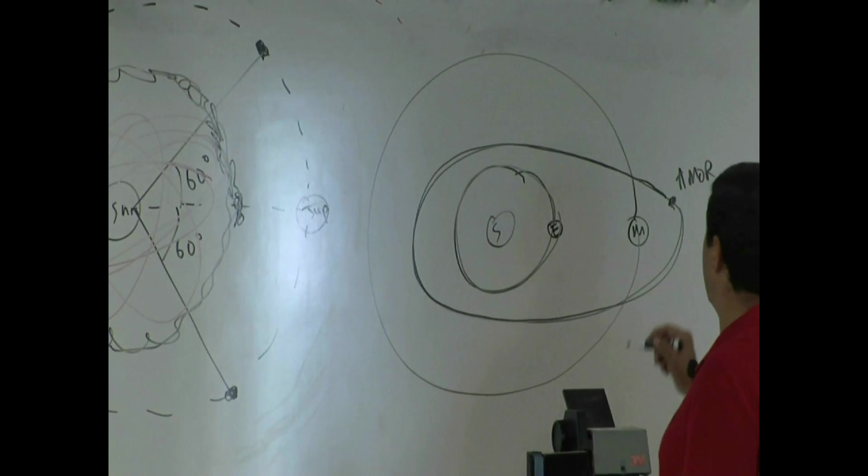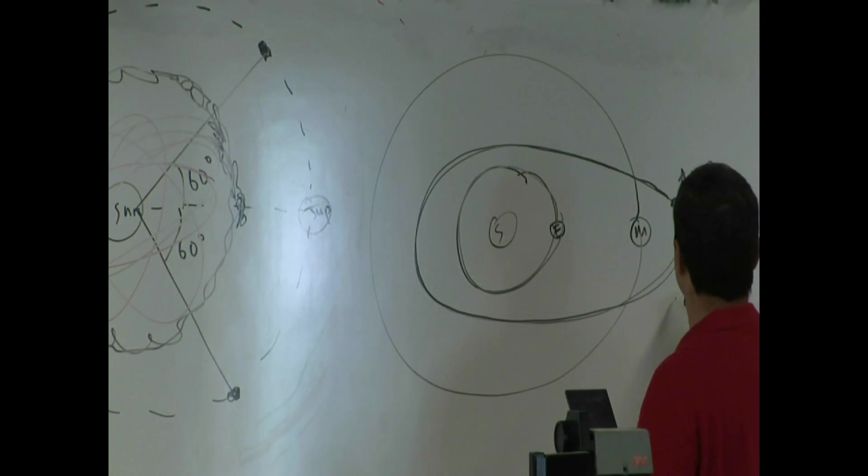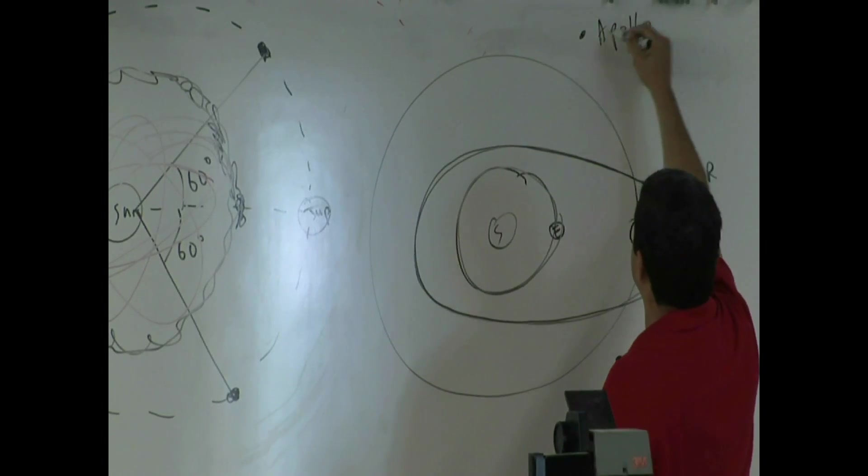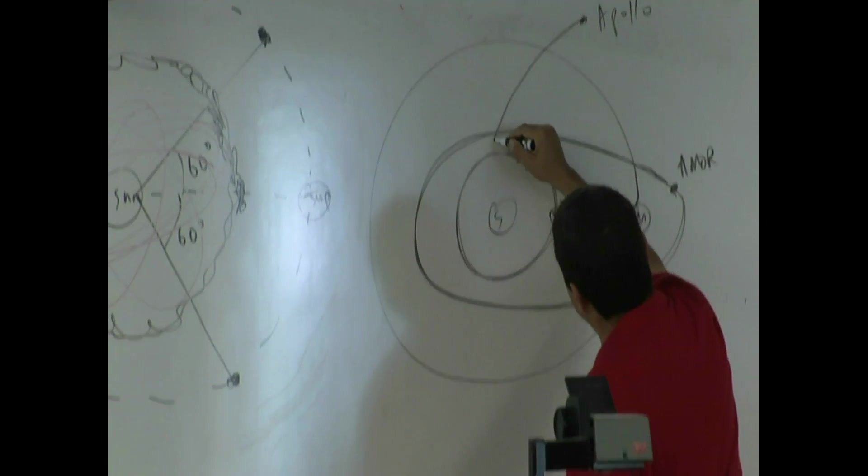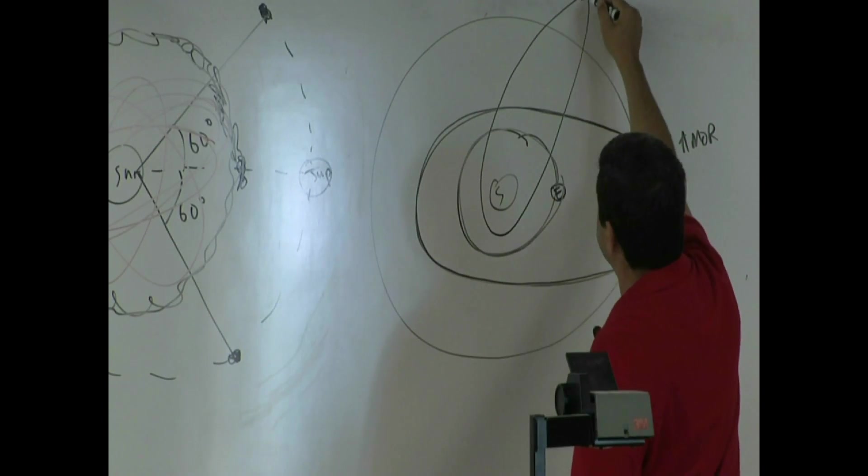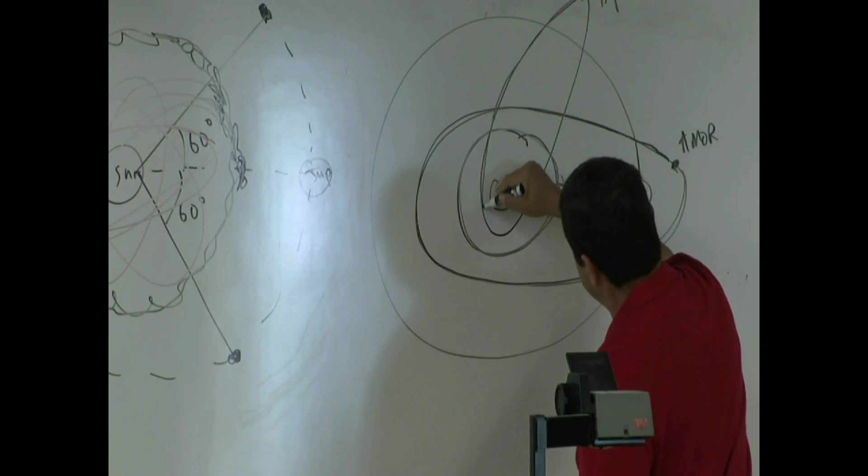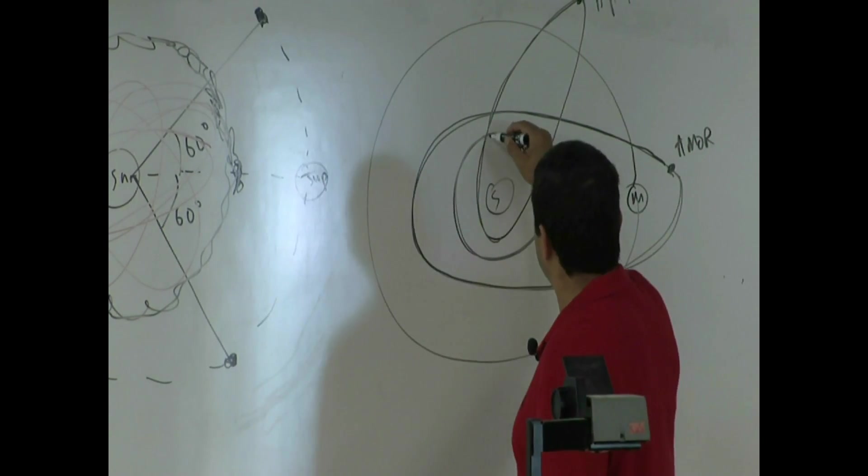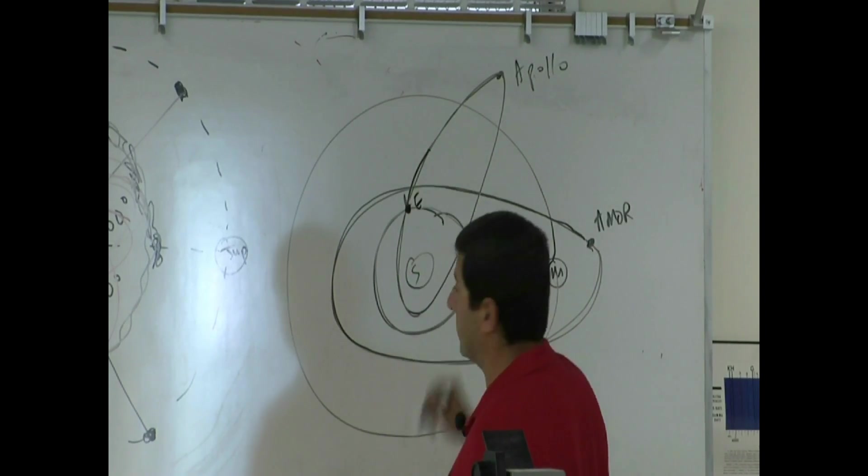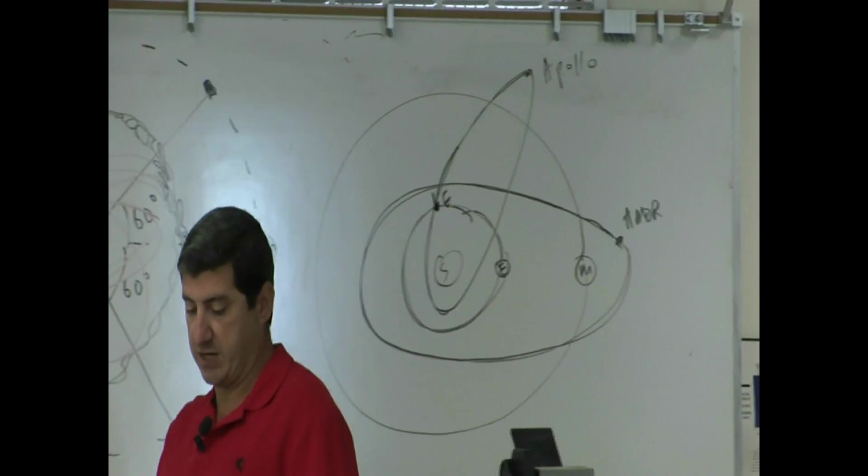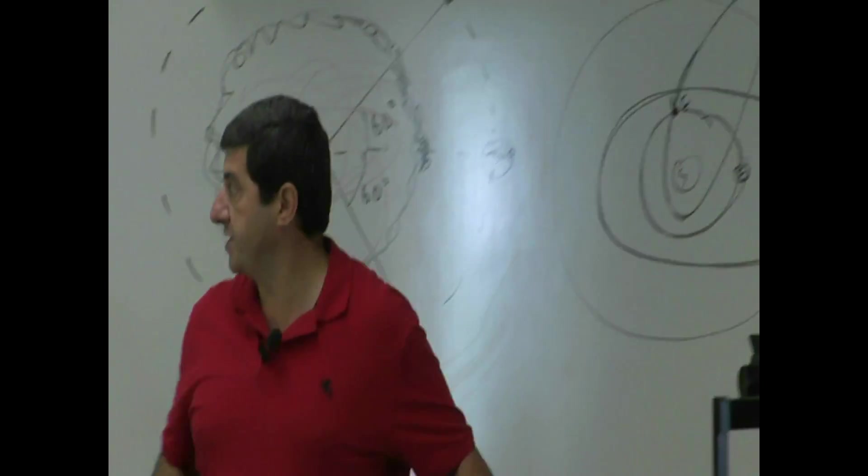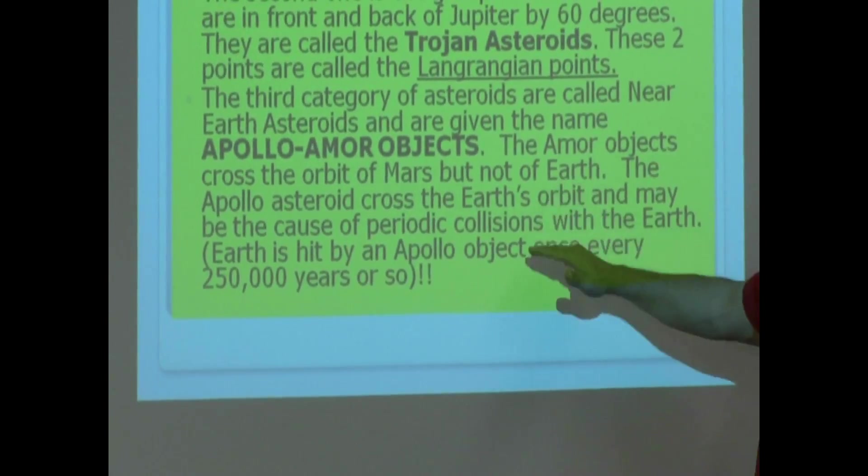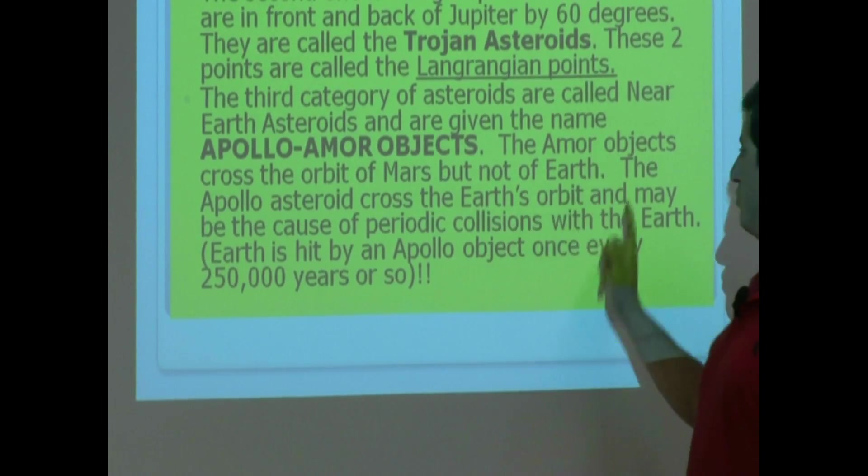The other one, the Apollo asteroid, might do something like this. Let's say, starting here, Apollo, it's going to come within the orbit of the Earth and then go back out. You see that? If the Earth was ever there and the asteroid is coming, it might hit us. So, Apollo is the one, the Apollo asteroid crosses the Earth's orbit and may be the cause of periodic collisions with the Earth.